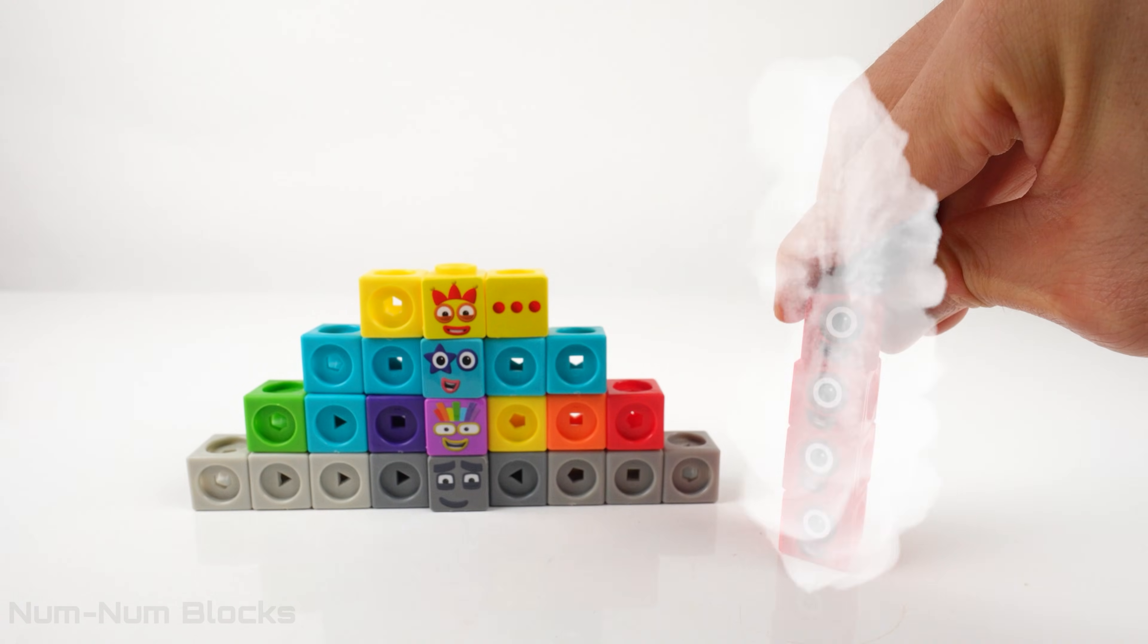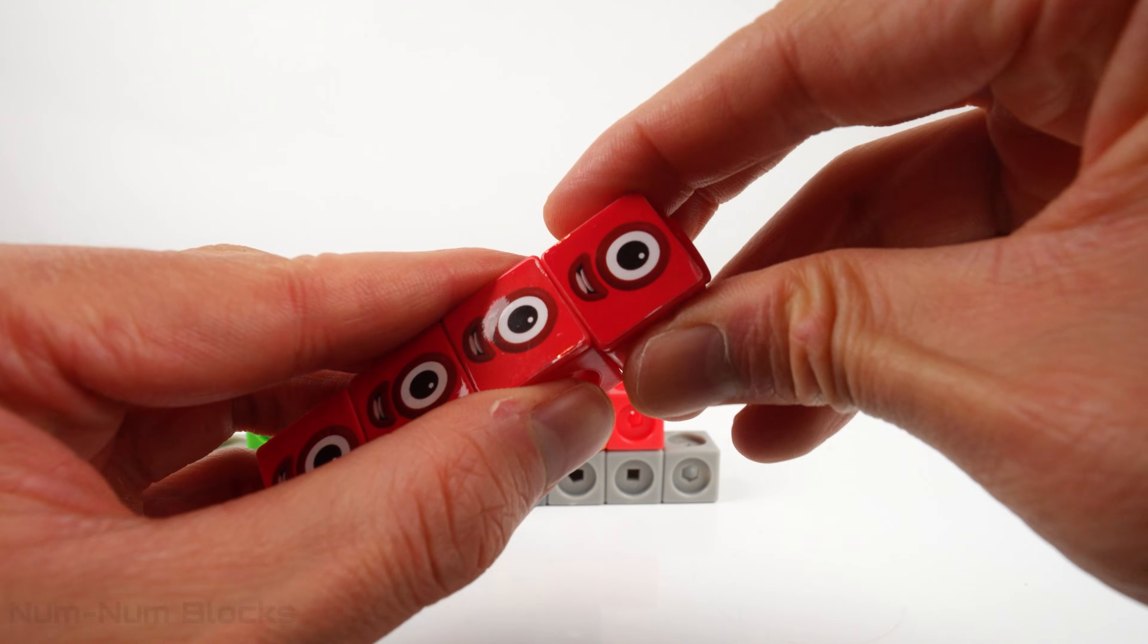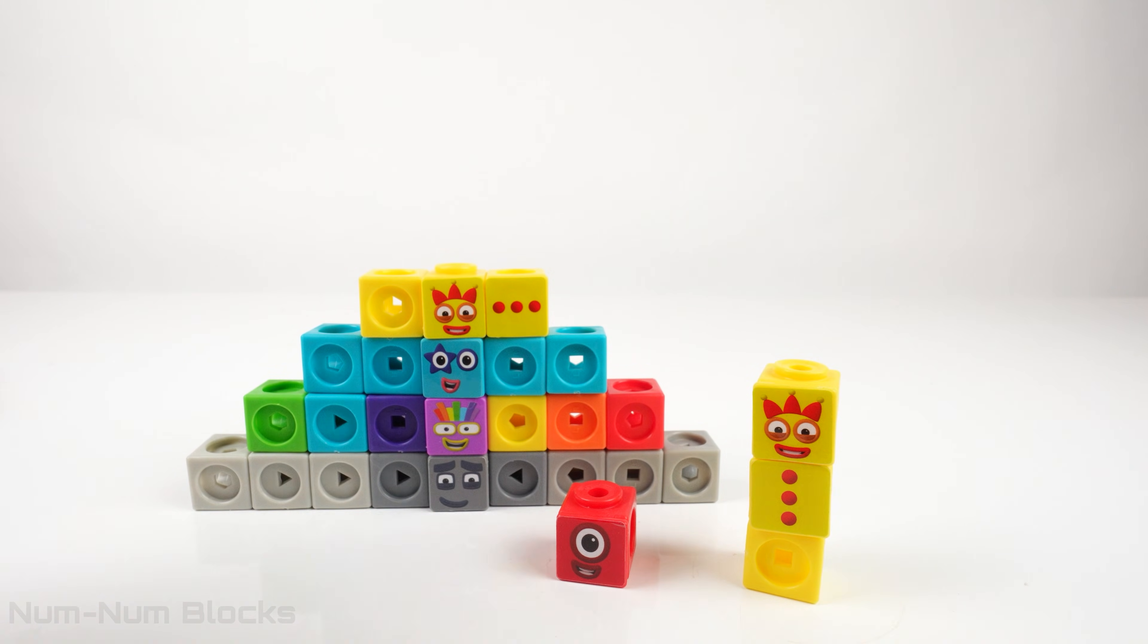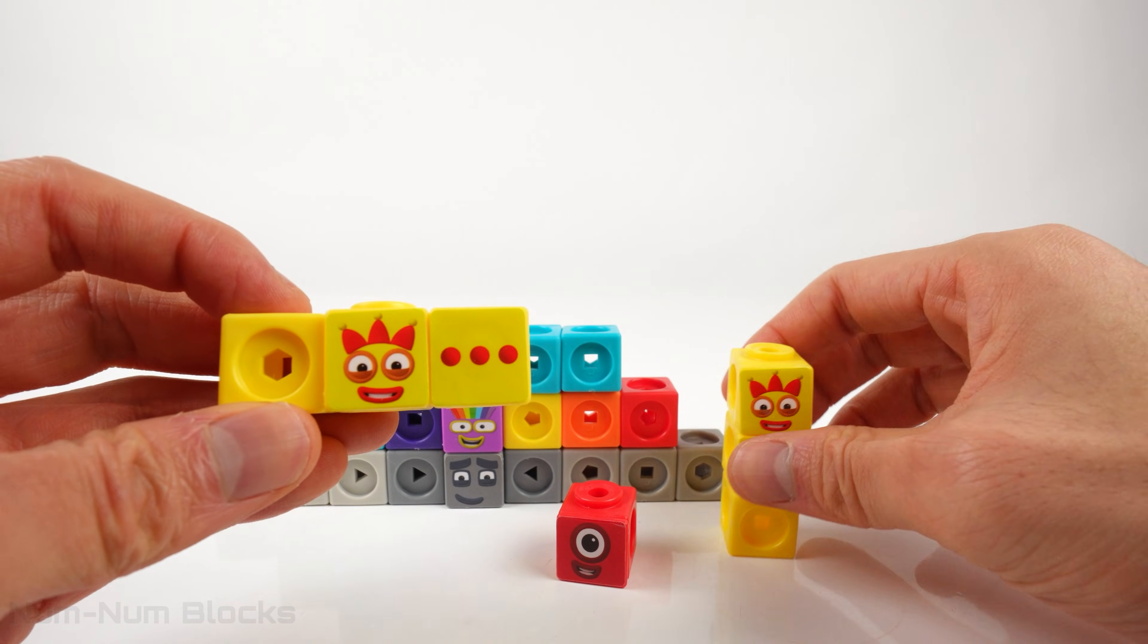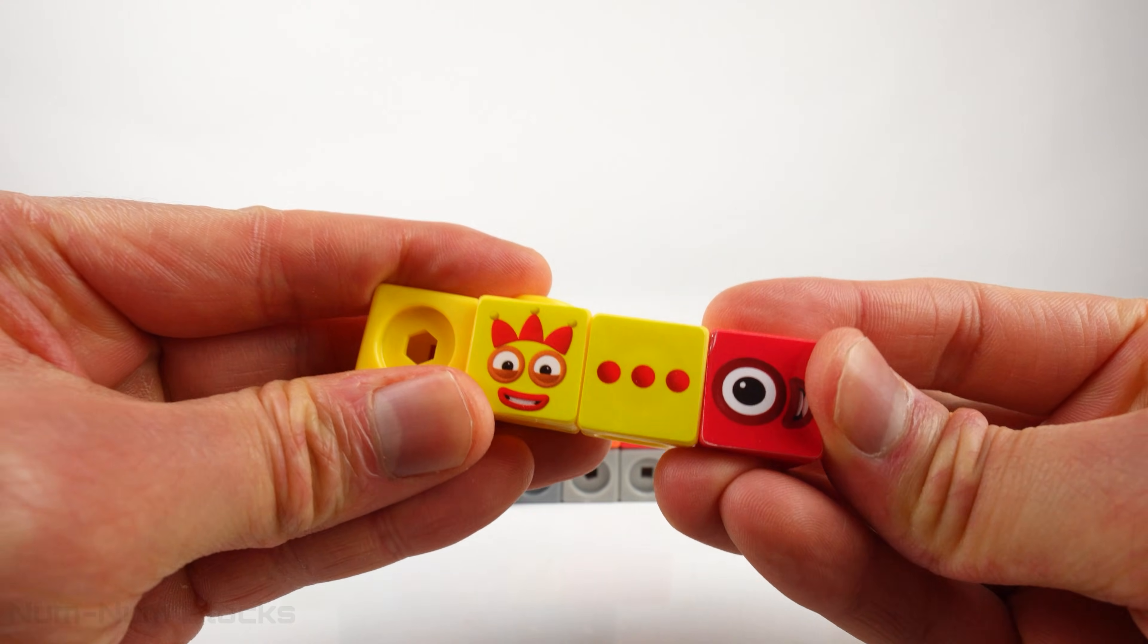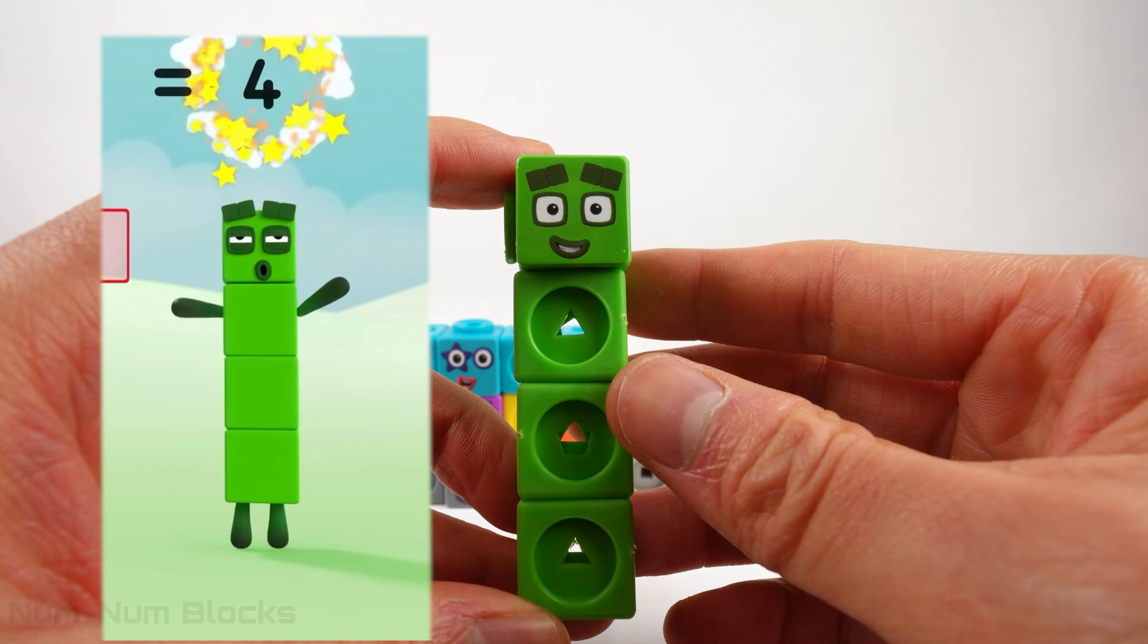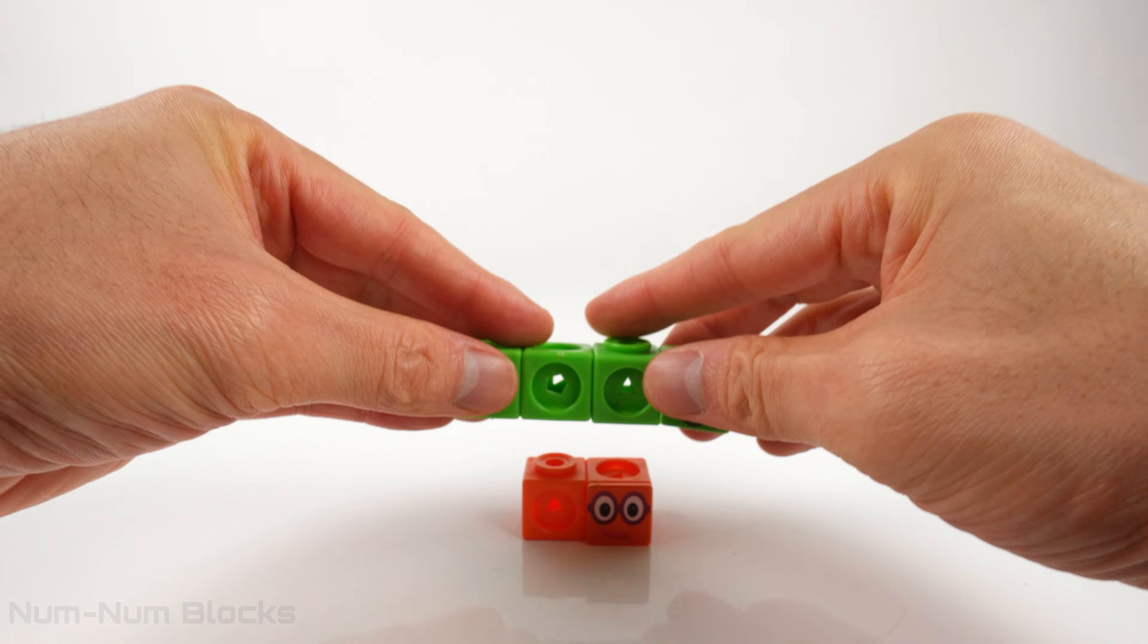4 is the same as 4 ones. To make our next even number, we're going to take 1 and add it to an odd number. 3! Do you know what 1 plus 3 is? It's 4! 4 is the next even number in our upside down pyramid.